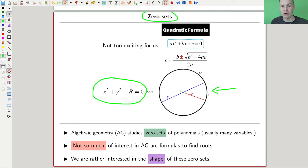That's the whole point of algebraic geometry. Algebraic geometry studies zero sets of polynomials, usually in many variables. In almost all illustrations I will stay with two variables because that's easier to illustrate, but usually there are many, many variables involved.